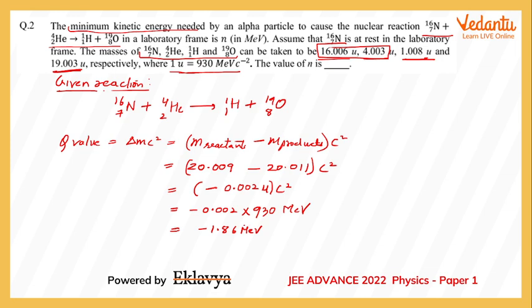A negative Q value means that to initiate this reaction, we need to provide this much energy. In this particular question, we are providing this energy in the form of kinetic energy. Many students may believe that this is the energy that the alpha particle must possess, but that is not true because in a collision situation, there is a limit to the amount of loss of kinetic energy that can take place.